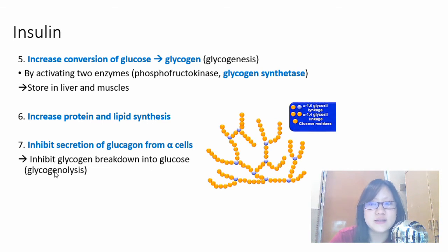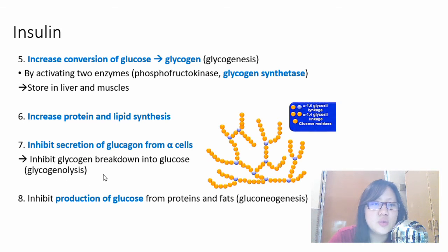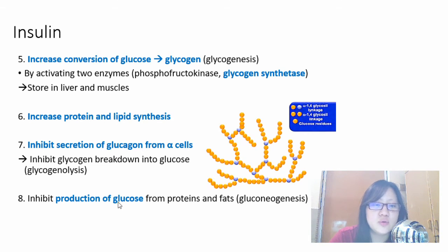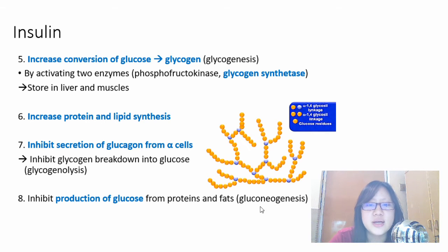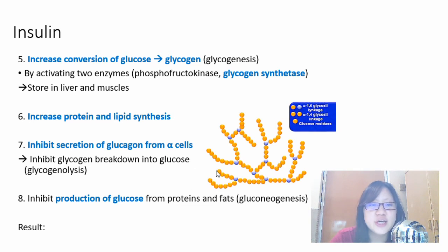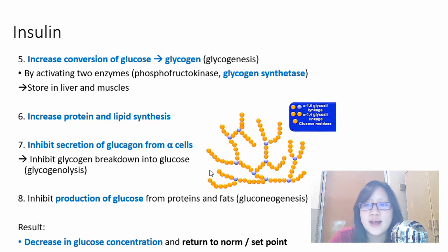Insulin also inhibits gluconeogenesis — the production of new glucose from proteins and fats. 'Gluco' refers to glucose, 'neo' means new. All these actions — increased respiration rate, increased glucose uptake, glycogenesis, inhibition of glycogenolysis and gluconeogenesis — all result in a decrease in blood glucose concentration, returning it to the normal set point. Both the longer descriptive terms and the single-word terms are accepted and will appear in mark schemes.